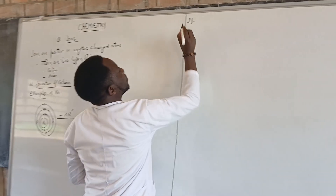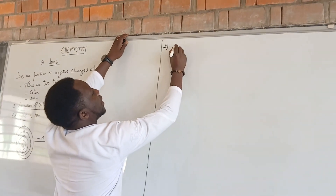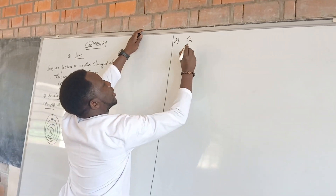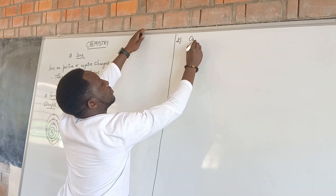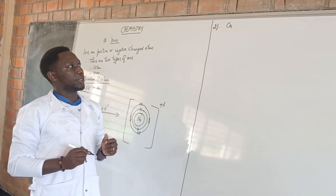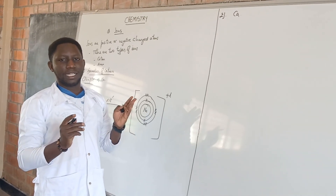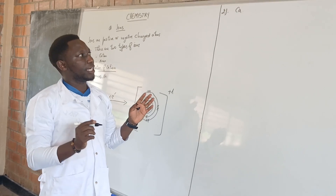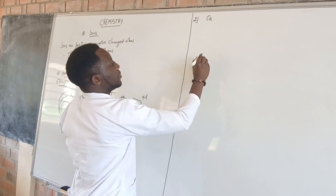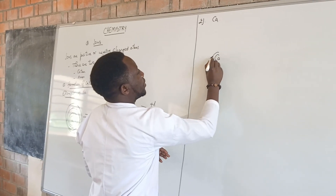Let us take another example — example 2. Let us take, for example, calcium. Calcium is number 20 on the periodic table, so it has 20 electrons. Let us show its electronic configuration.